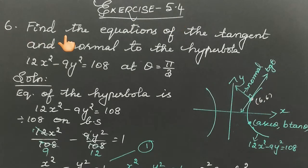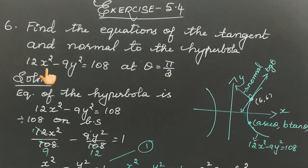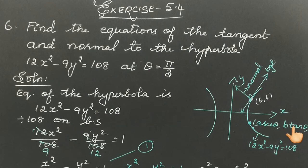Exercise 5.4, sixth sum: find the equations of the tangent and normal to the hyperbola 12x² minus 9y² equals 108 at theta equals pi by 3. We are asked to find the equations of the tangent and also the normal to the hyperbola at theta equal to pi by 3. Any point on the hyperbola is of the form (a secθ, b tanθ).